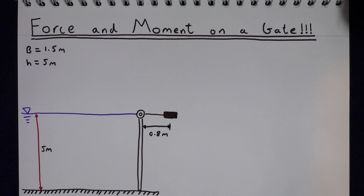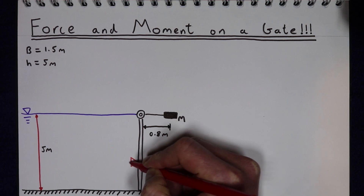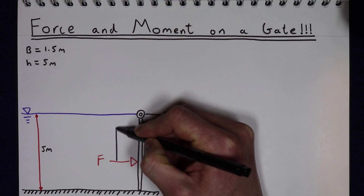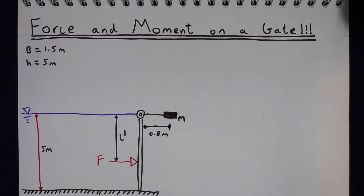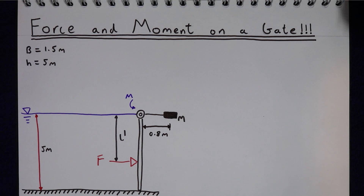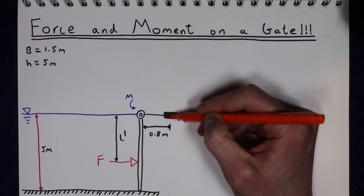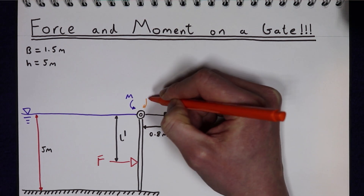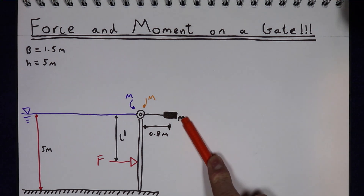The question we're asking is: if we assume that the gate is shut, what does this mass M need to be to apply a moment at this hinge equivalent to the moment from the water? We've got a certain force F being applied to the gate by the water, acting at a certain point L', and the product of that force times by this lever arm gives us a moment at the hinge trying to open the gate. If the gate is staying shut, that's because the force of this mass times acceleration times by the lever arm gives the equivalent moment in the opposite direction.